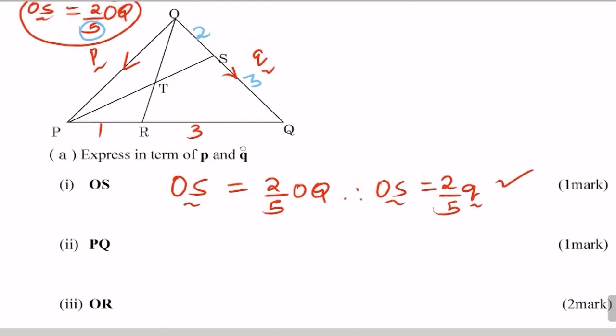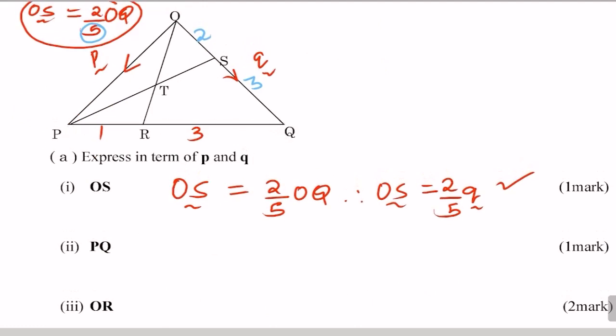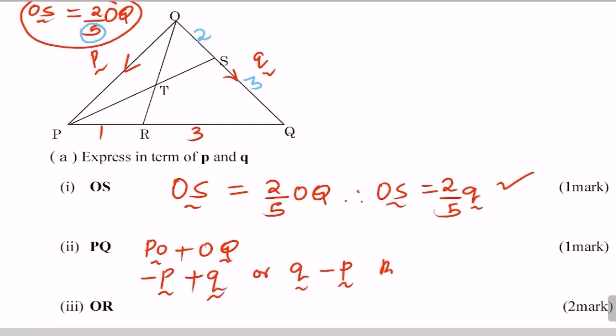Part 2: PQ. From P to Q, you can follow the route from P to O, then O to Q. This gives PO plus OQ. Since OP equals p, moving in the opposite direction PO equals negative p. Plus OQ which is q. So PQ equals negative p plus q, or equivalently q minus p.